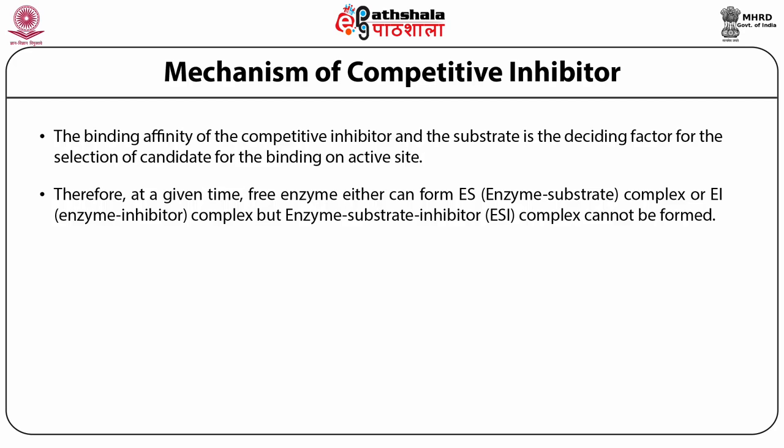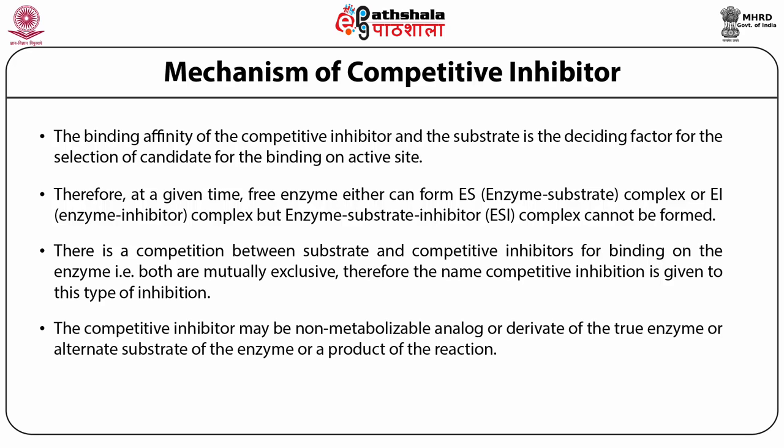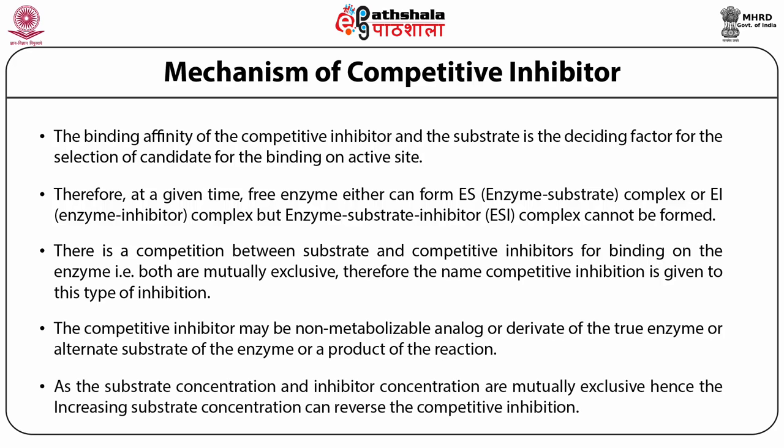We will not have any ESI complex in competitive inhibition — there is a competition between substrate and competitive inhibitor, so they are mutually exclusive. If one binds, it excludes the other. If the competitive inhibitor is non-metabolized, it will inhibit the reaction; if it is metabolized, it may be converted into product, but most competitive inhibitors are not metabolized. At any substrate concentration, inhibitor and substrate binding are mutually exclusive. Therefore, if you increase the substrate concentration, you can reverse the competitive inhibition, because the greater quantity of substrate leads to removal of the inhibitor from the competition — the substrate wins and binds to the active site.